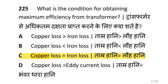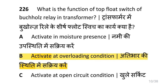What is the condition for obtaining maximum efficiency in a transformer? That is when copper loss is equal to iron loss. What is the function of the top float switch of Buchholz's relay in a transformer? That is to activate at overloading condition.